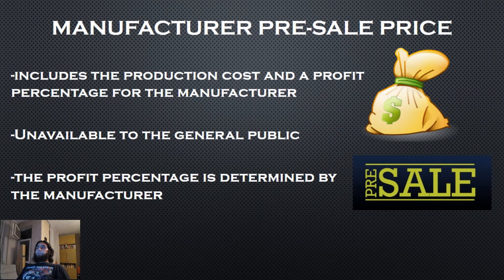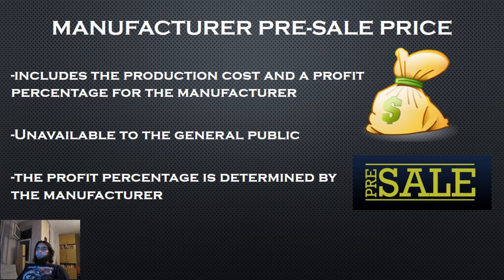The second type is the manufacturer pre-sale price. This price includes the production cost, component expenses like software, copyright taxes, shipping, and others, plus the profit percentage. This pricing is unavailable to the general public — it is only available to PC hardware distributors and big PC retail stores. Each manufacturer determines their own profit percentage, and sometimes it's fair and sometimes it's not. As an example from my time as a project engineer in electronics, the production cost of a device I designed was $25, but the company sold it for $500.